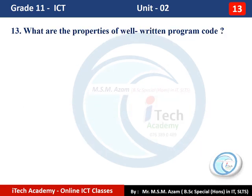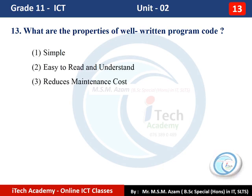Question Number 13: What are the properties of well-written program code? When we write a computer program, we must keep certain good properties. A well-written program code should be: first, simple; second, easy to read and understand; third, it should reduce maintenance cost.